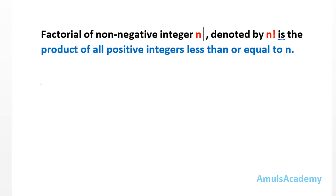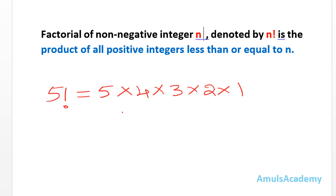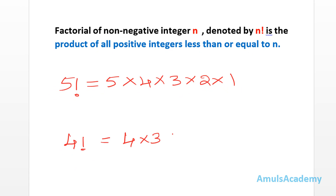For example, if I want to find out the factorial of 5, then 5! is the product of all positive integers less than or equal to 5, so that is 5 × 4 × 3 × 2 × 1. And if I want to find out 4!, that is 4 × 3 × 2 × 1. This is what we discussed in the previous tutorial.